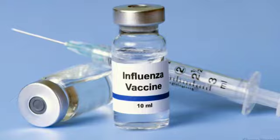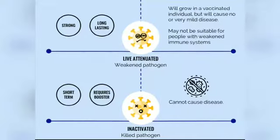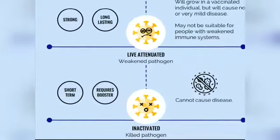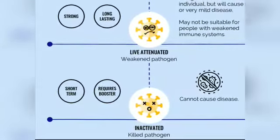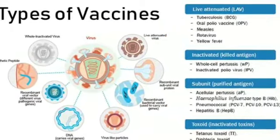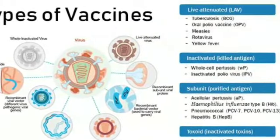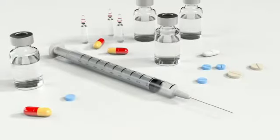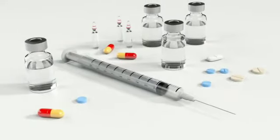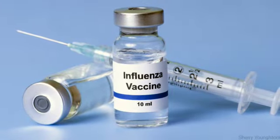Vaccination is the administration of antigenic material — that is, the vaccine — to produce immunity to a disease. There are a few different types of vaccines. Attenuated, or weakened, live viruses are used in some vaccines such as the measles, mumps, and rubella vaccine. Killed or inactivated viruses or bacteria are used in some vaccines such as IPV. Toxoid vaccines contain an inactivated toxin produced by the bacterium — for example, the diphtheria and tetanus vaccines. Conjugate vaccines, such as Haemophilus influenzae type b, contain parts of bacteria combined with proteins.